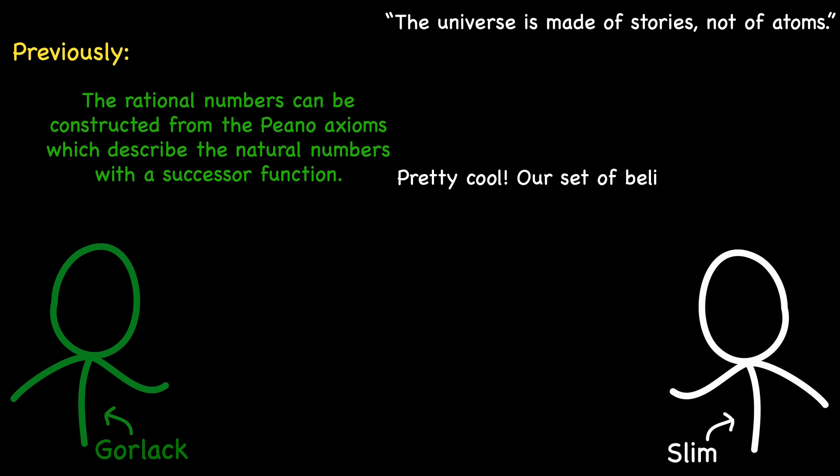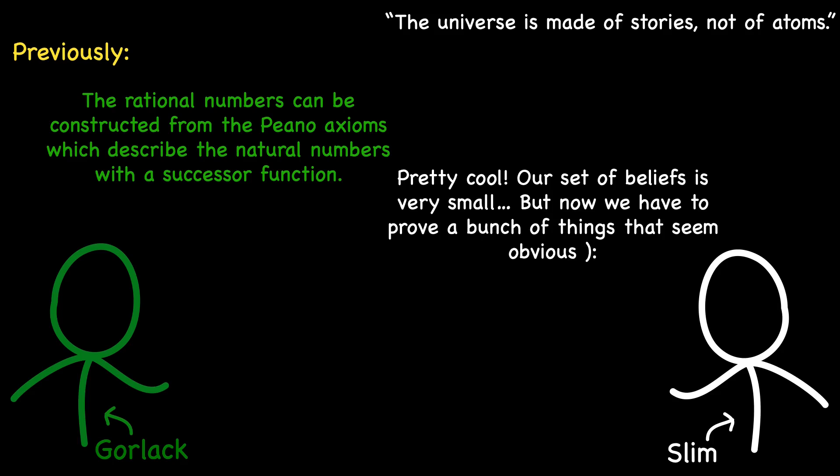However, the trade-off emerges when we find ourselves tasked with proving seemingly trivial things that might scream obvious. For instance, in our sketch, we deftly sidestepped the heavy lifting of proving elements like the associativity or commutativity of addition.